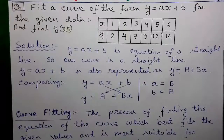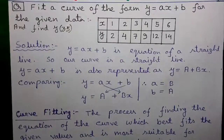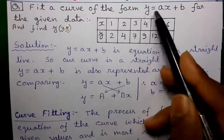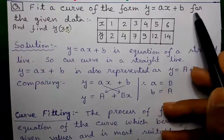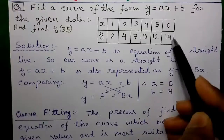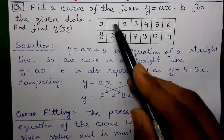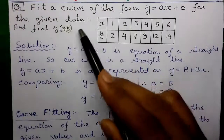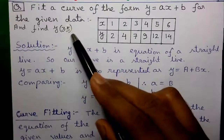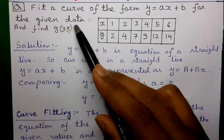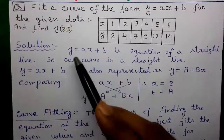So let's start today's video on graphical method. Our question is: fit a curve of the form Y equals AX plus B for the given data set, where values of X and corresponding values of Y are given. Also find out Y(3.5), that means find out the value of Y for X equals to 3.5. So let's proceed to the solution.